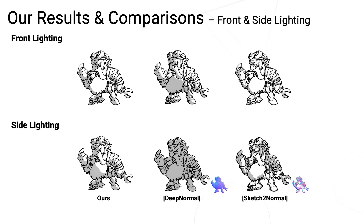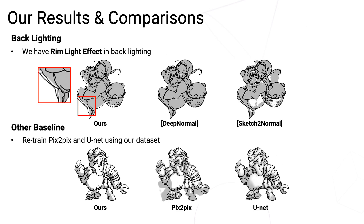When the depth of the lighting source changes, our results have accurate and apparent shadowing changes. However, Deep Normal has an accurate depth appearance in front lighting and side lighting, and Sketch2Normal suffers from complex line drawings. In back lighting conditions, our results have rim light around the object boundary, while Deep Normal and Sketch2Normal do not.